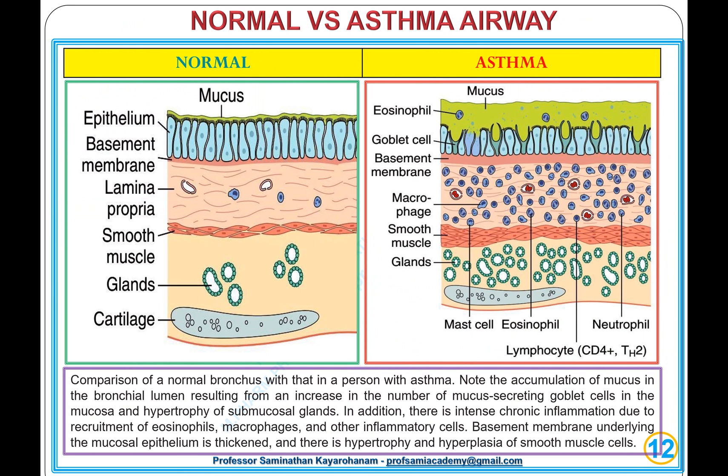Normal versus asthma airway: Comparison of a normal bronchus with that of a person with asthma shows accumulation of mucus in the bronchial lumen resulting from an increased number of mucus-secreting goblet cells in the mucosa and hypertrophy of submucosal glands. There is intense chronic inflammation due to recruitment of eosinophils, macrophages, and other inflammatory cells. The basement membrane underlying the mucosal epithelium is thickened, and there is hypertrophy and hyperplasia of smooth muscle cells.